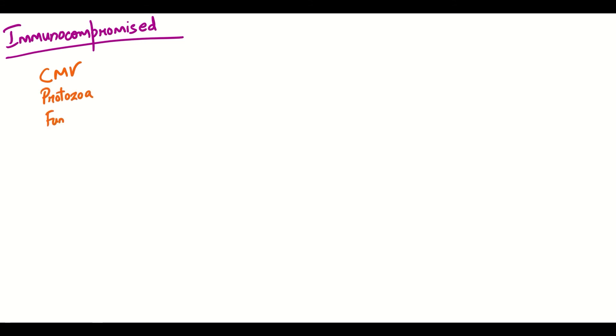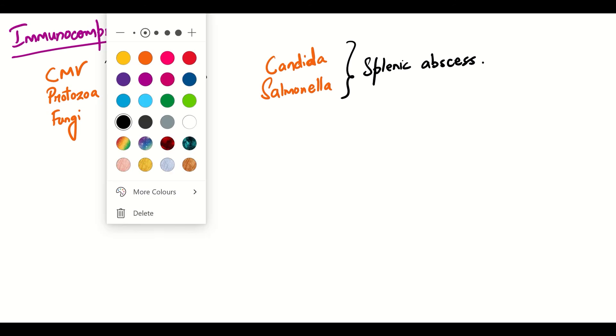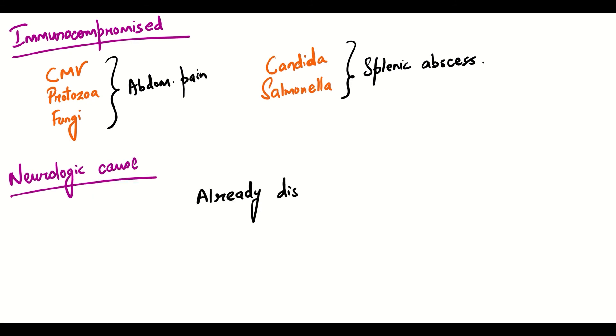If a patient is immunocompromised, one must remember that cytomegalovirus, protozoa or fungal infections can cause abdominal pain. Also, if an immunocompromised patient presents symptoms of splenic abscess, then Candida and Salmonella should also be taken in the differential diagnosis. Neurologic causes have already been discussed in the pain video — you can check that out.